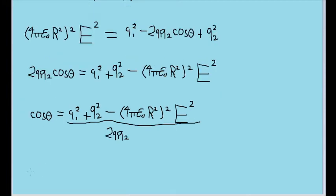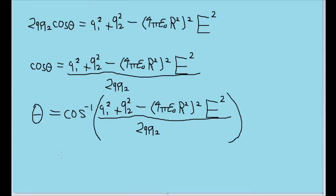Finally, we just need to invert the cosine function to solve for theta by putting this entire thing here into an arc cosine function. Phew, and this is the final formula we'll need to use, as unwieldy as it may seem.